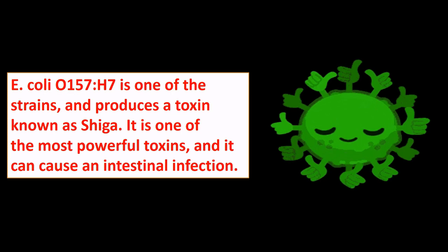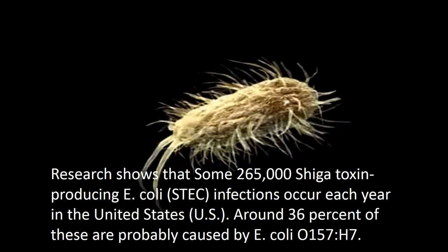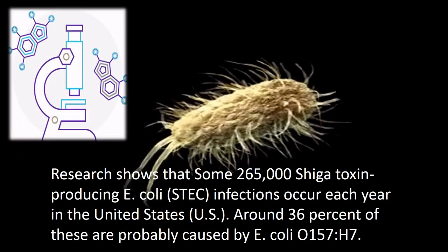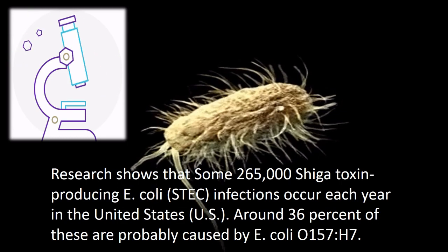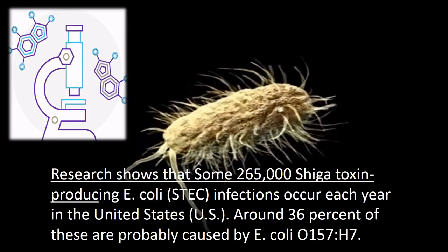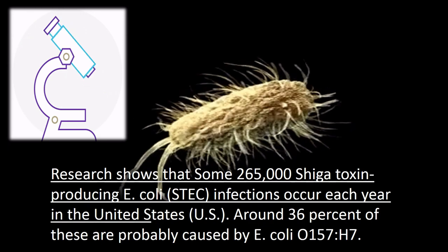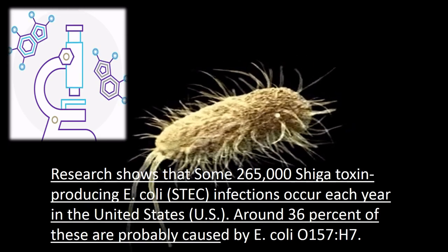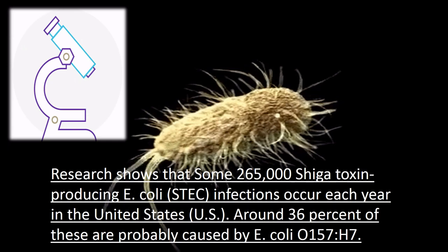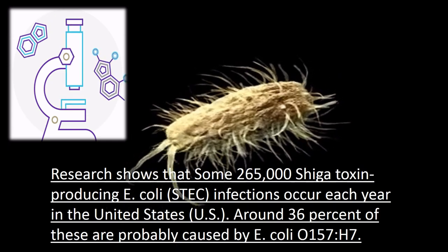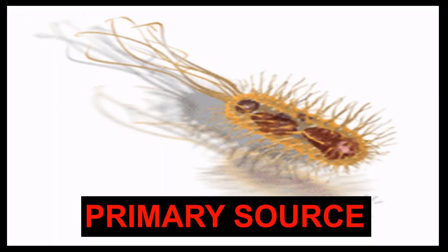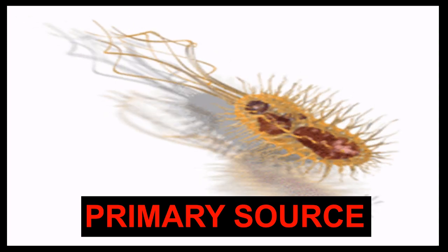Research shows that some 265,000 Shiga toxin-producing E. coli (STEC) infections occur each year in the United States. Around 36 percent of these are probably caused by E. coli. When a foodborne outbreak occurs, it usually involves a Shiga toxin-producing E. coli.